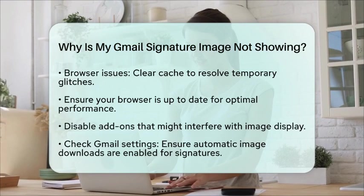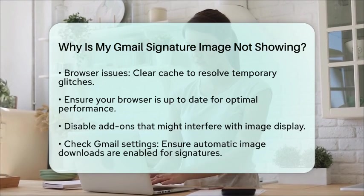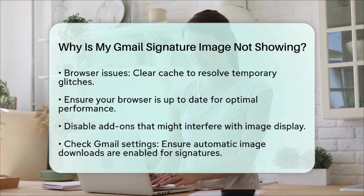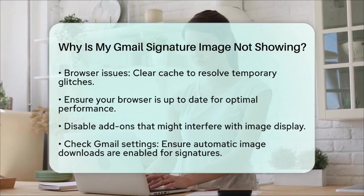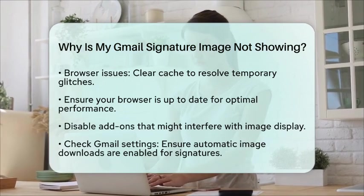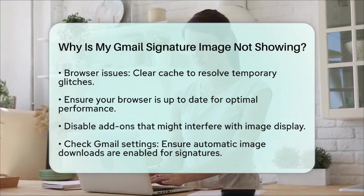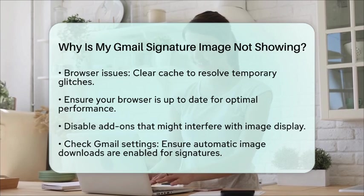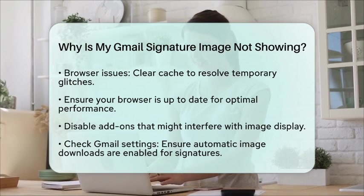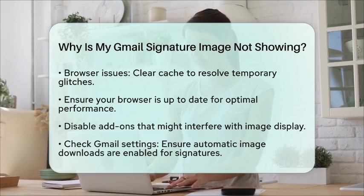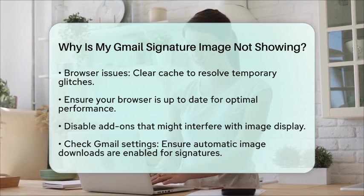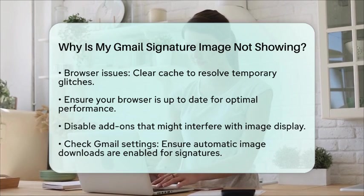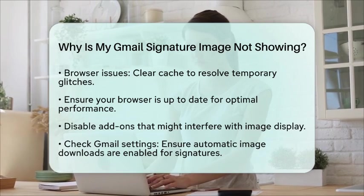Lastly, check your Gmail settings for automatic image downloads. If this feature is turned off, images in your signature may not appear. Make sure this setting is enabled to allow images to show up in your emails.